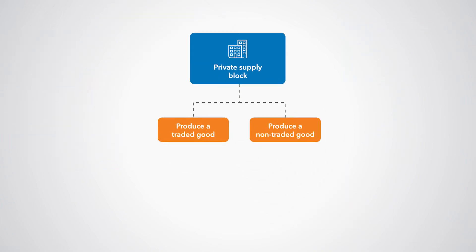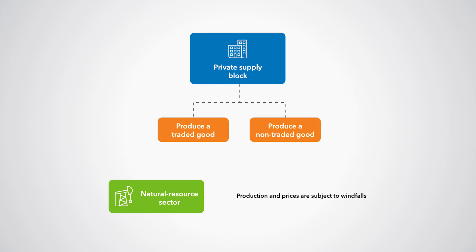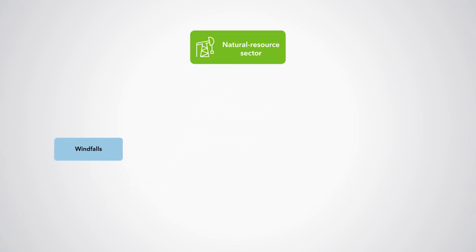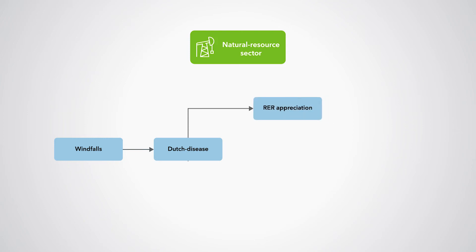In DIGNAR, there is also a natural resource sector whose production and prices are assumed to be exogenous and subject to windfalls — for example, large price increases. These windfalls can induce Dutch disease effects, which denote an appreciation of the real exchange rate and an output loss in the traded sector.